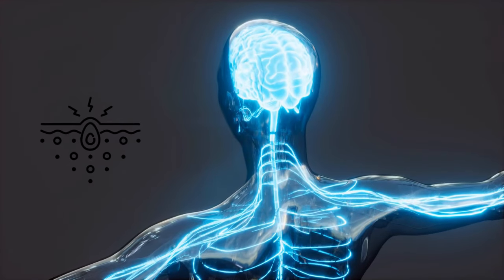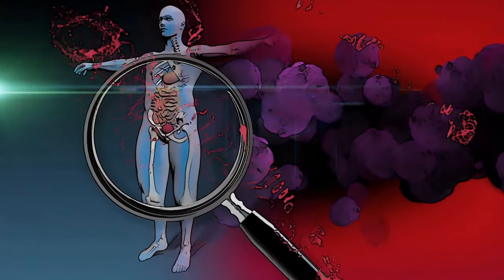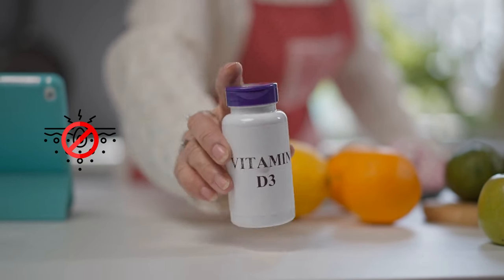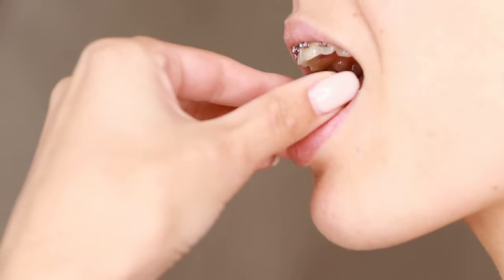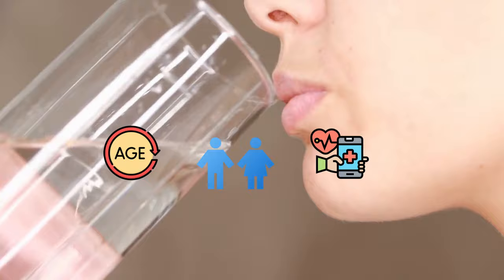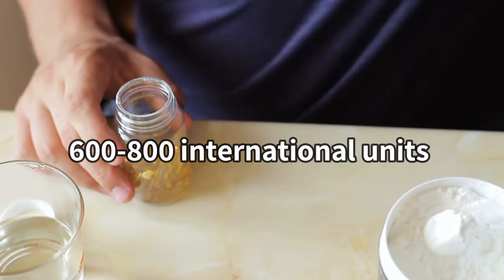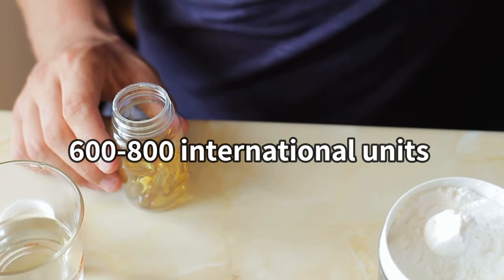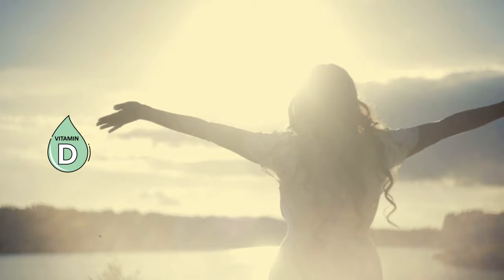In conditions where nerve damage is associated with inflammation, such as autoimmune disorders, vitamin D3 helps bring down inflammation and reduce nerve damage. The recommended daily intake of vitamin D can vary based on age, sex, and specific health needs. For most adults, the recommended daily intake of vitamin D is around 600 to 800 international units.